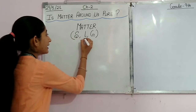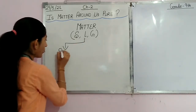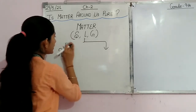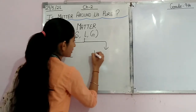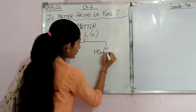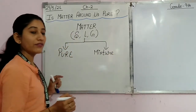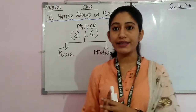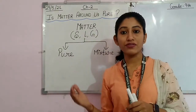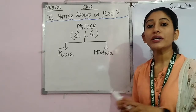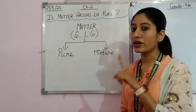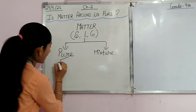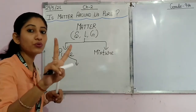Matter exists in two forms: one is pure and another one is mixture. When we talk about pure matter or pure substance, in terms of chemistry, when a substance constitutes a particular type of matter, it is called pure. From here we come to know that pure matter can exist in two types — either in the form of an element or in the form of a compound.